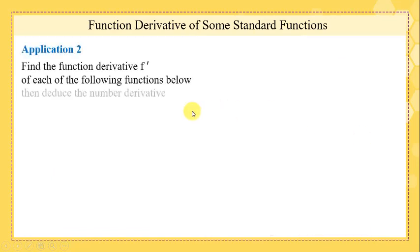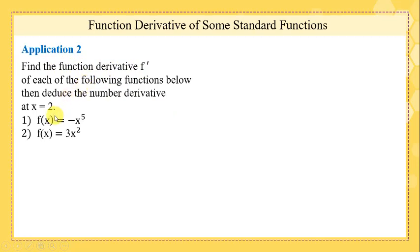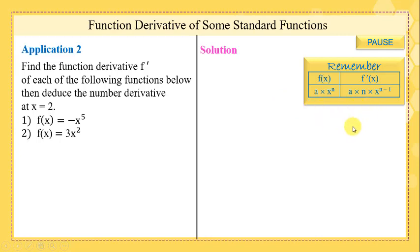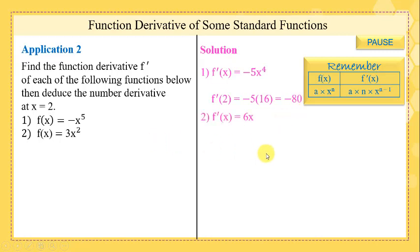Application — do it by yourself. Find the derivative of these two functions, then deduce the number derivative at x = 2. First, remember the rule, then apply it. For -x⁵, the derivative is -5x⁴, and the number derivative at x = 2 is found by substituting x = 2. For the second example, 3x² gives 6x, and the number derivative at x = 2 is found by substituting x = 2.